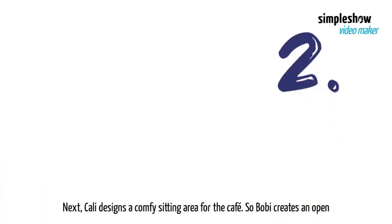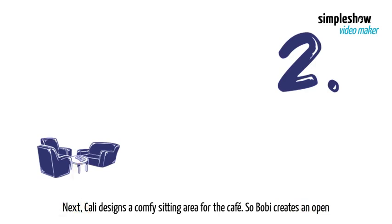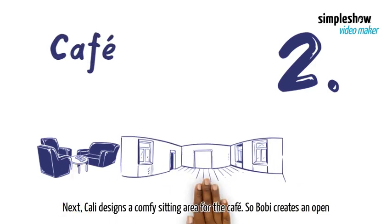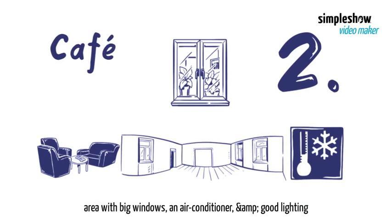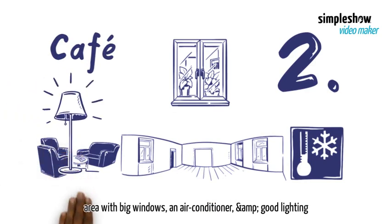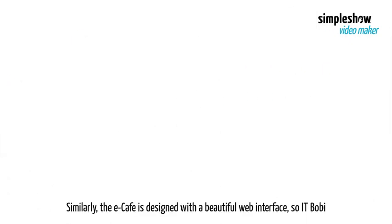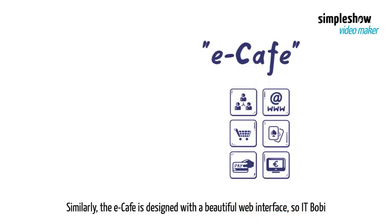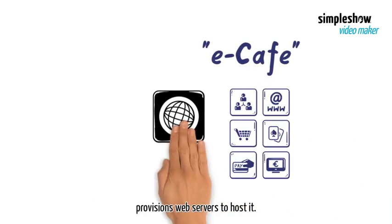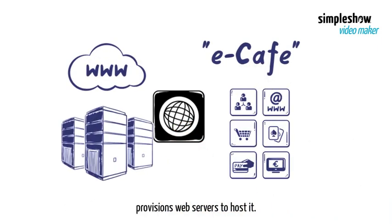Next, Kali designs a comfy sitting area for the cafe, so Bobbi creates an open area with big windows, an air conditioner, and good lighting. Similarly, the eCafe is designed with a beautiful web interface, so IT Bobbi provisions web servers to host it.